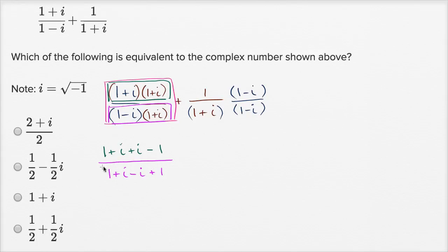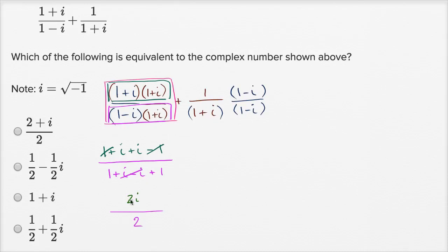So what does this simplify to? In the numerator: one minus one cancels out, and i plus i gives two i. In the denominator: one plus one equals two. So the first fraction becomes 2i/2. My goal right now isn't to simplify further — I just want to have a like denominator, so I'll leave it as 2i/2.